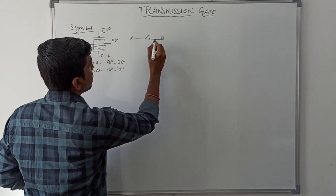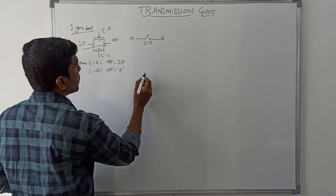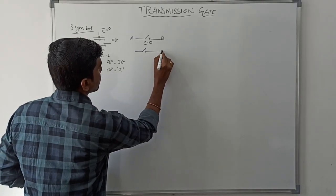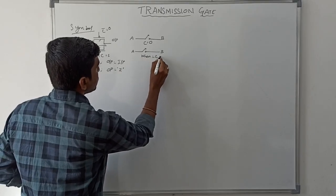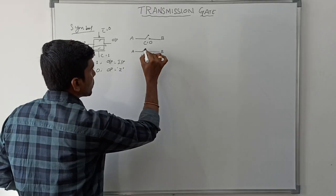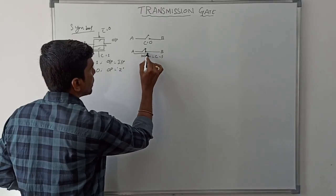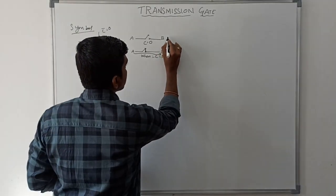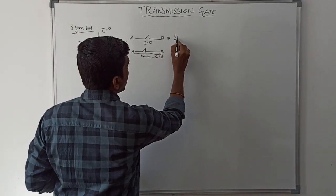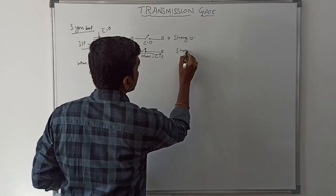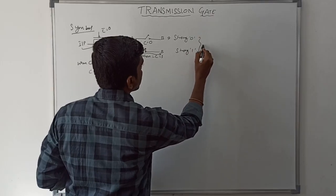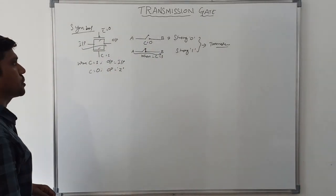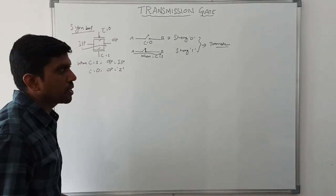When C equals 0, the transmission gate is an open circuit. When C equals 1, the switch is closed and the input data is transferred to output. This is the switching schematic diagram for the transmission gate. The transmission gate transfers both strong logic 0 and strong logic 1 values.